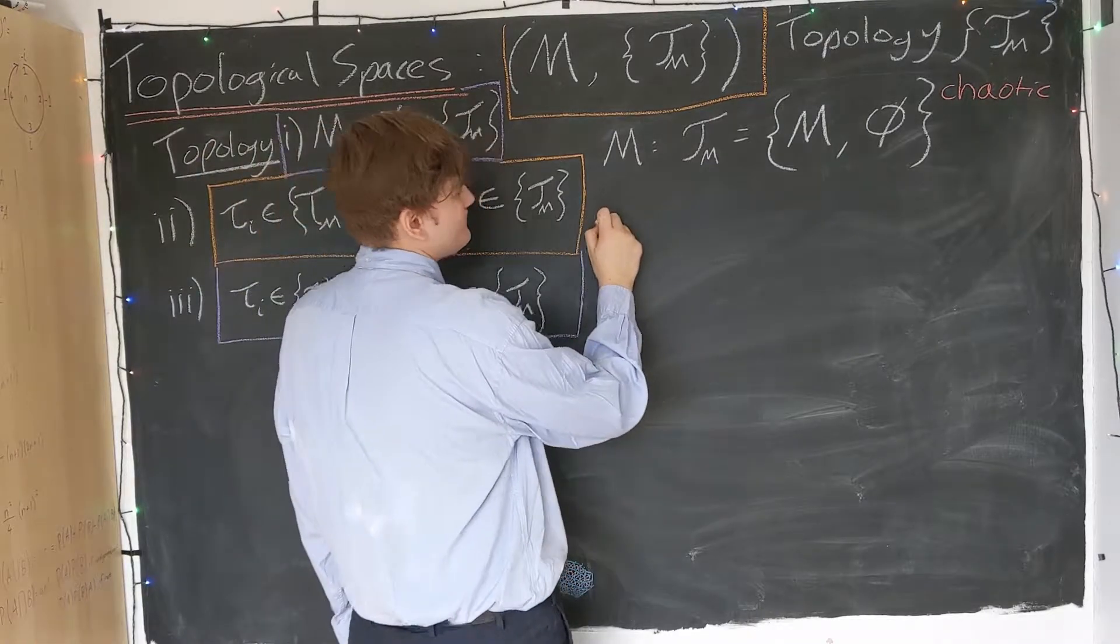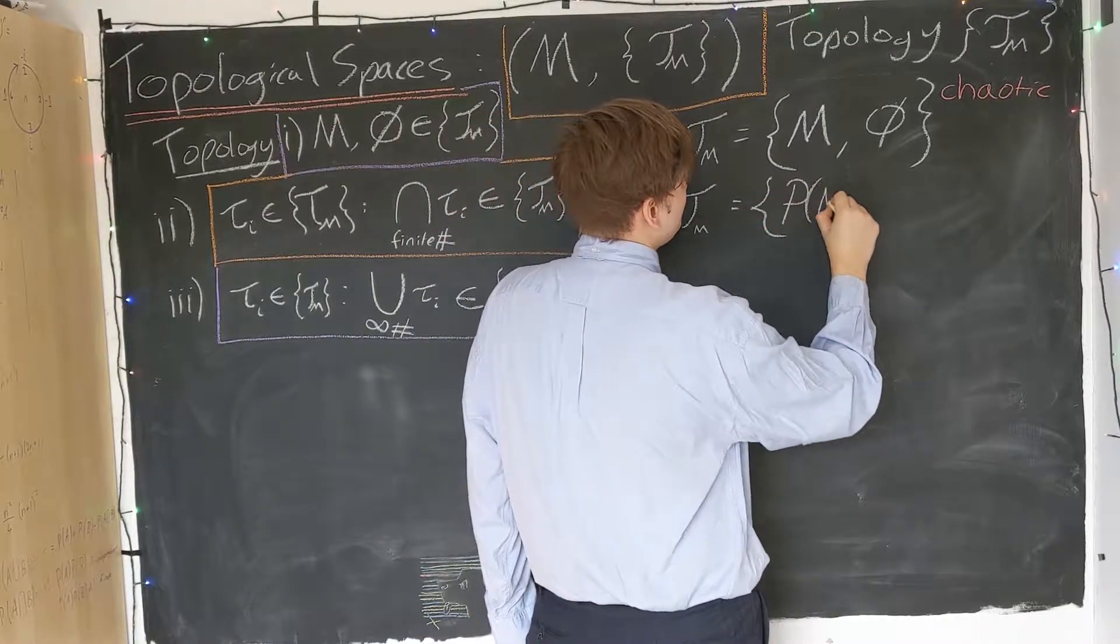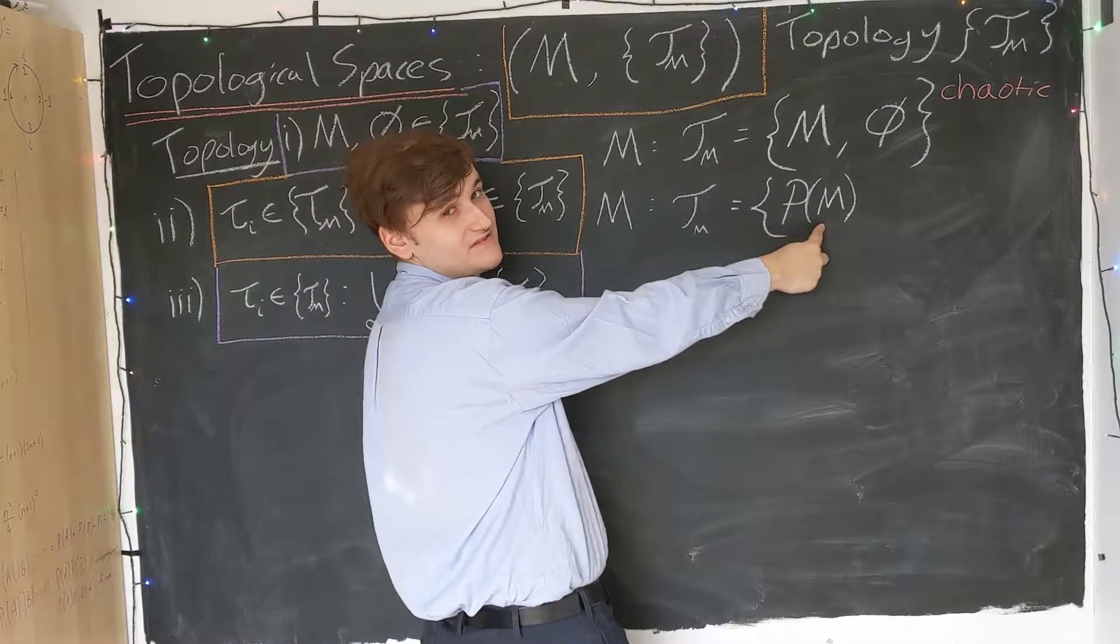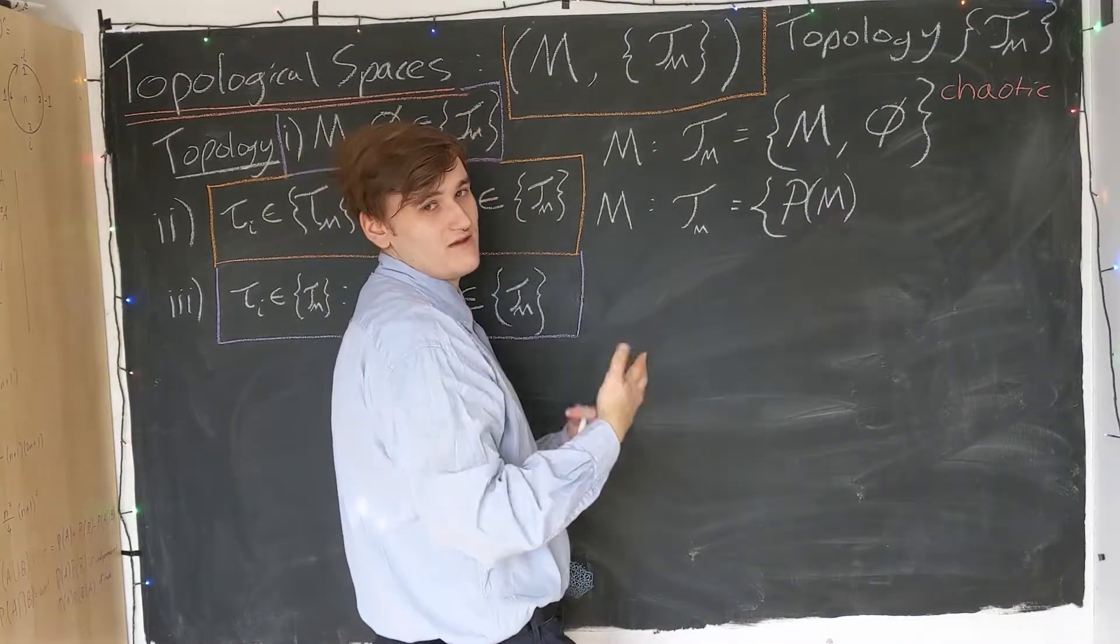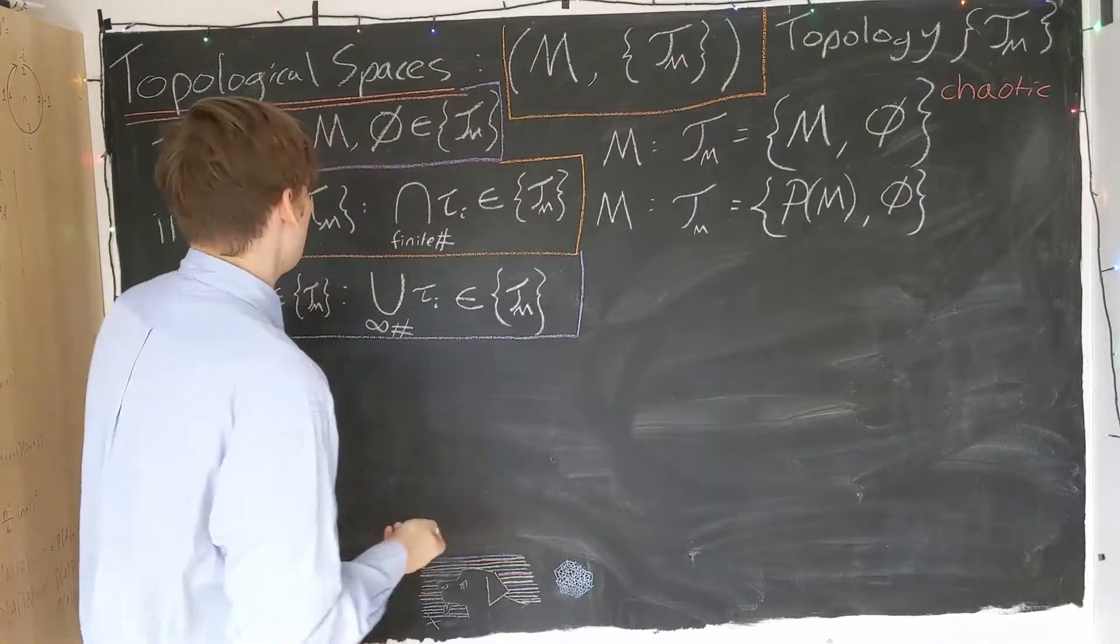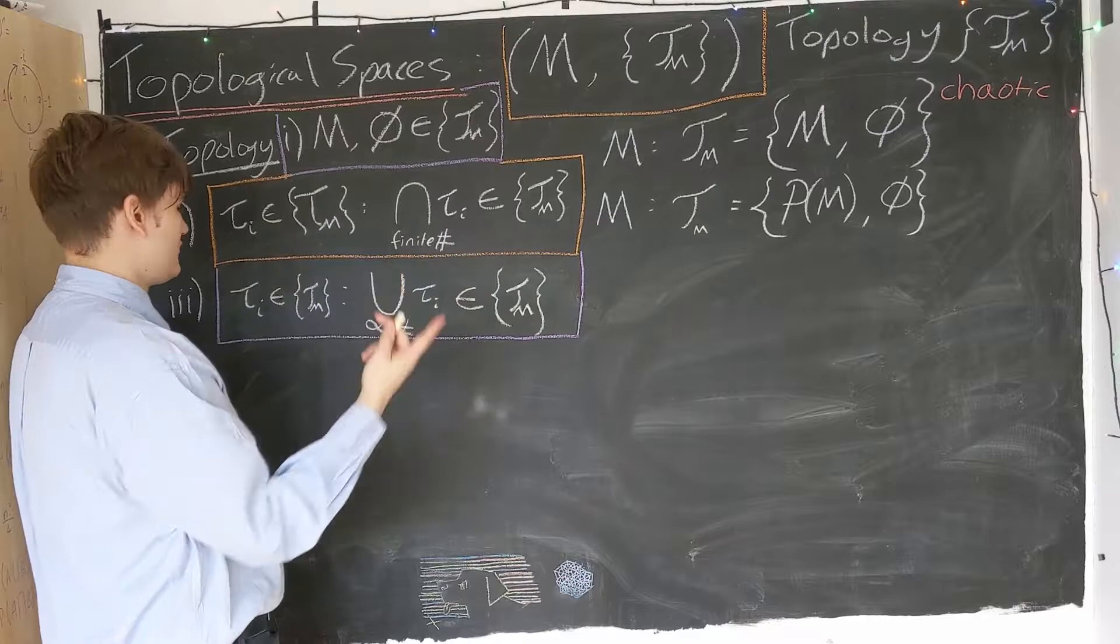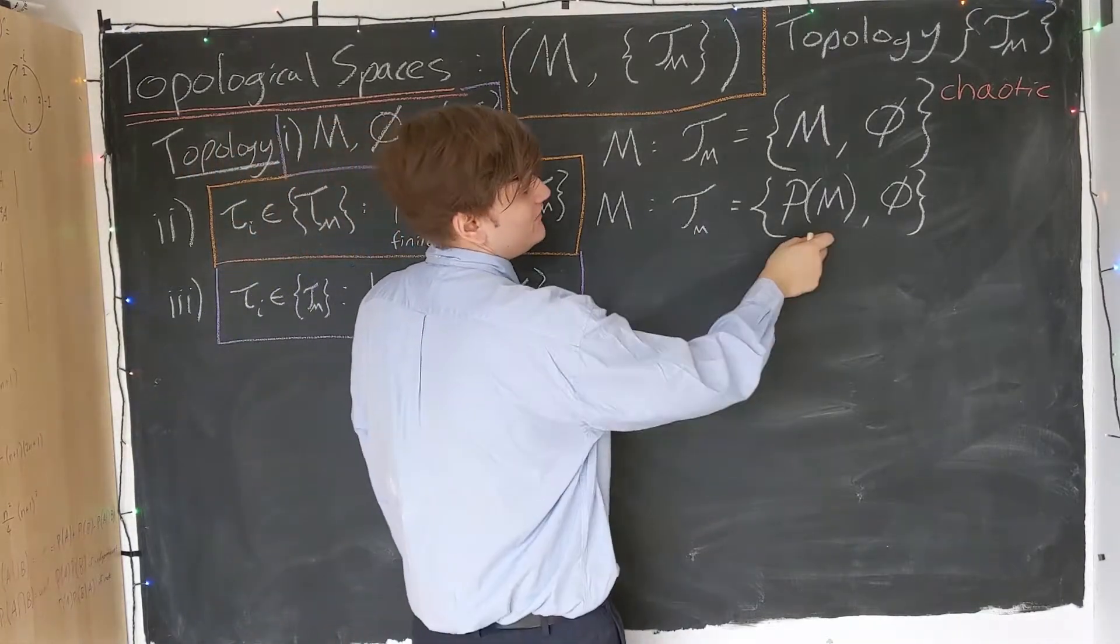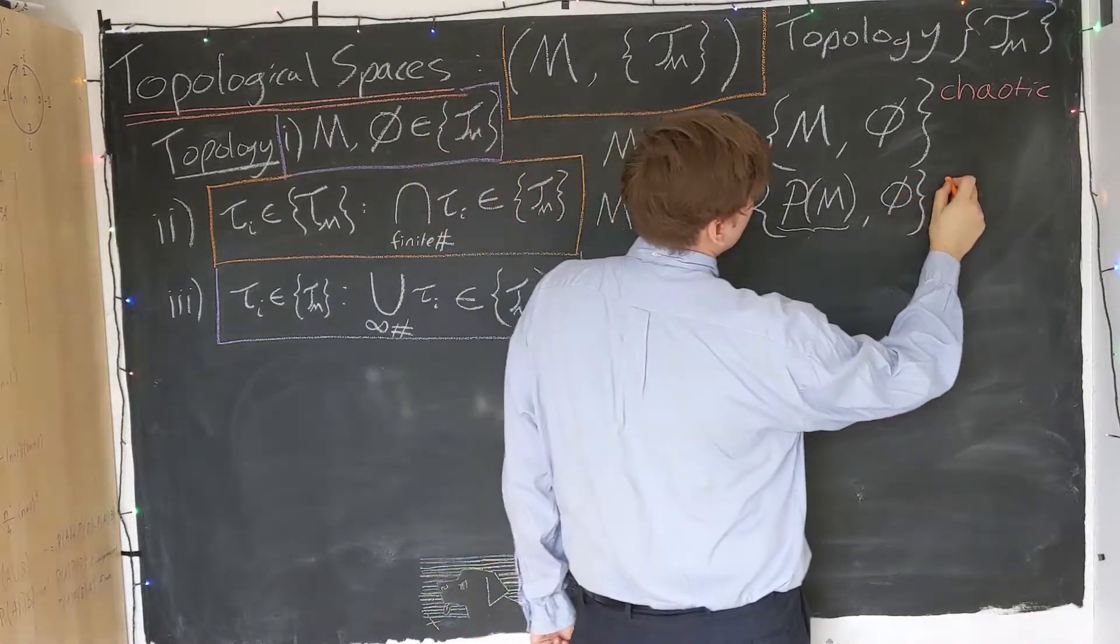So another topology we can consider: again, take the set M, now consider the topology P of M. Now this notation means the power set of M. The power set is simply defined to be the set of all possible subsets of M. So this is going to be a huge thing. If M is some, say, 10 element set, the power set is going to be a massive number of all the possible subsets that we could possibly create. Obviously, the set itself is in the topology because it's included in this power set. And then you can quite easily also check that finite intersections of any possible two subsets of M is just going to be another subset of M. So it's going to lie in the topology through the fact that we've used the set of all possible subsets.